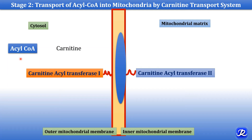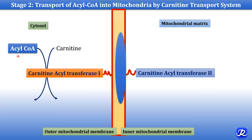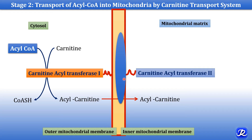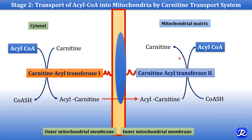The acyl-CoA cannot traverse the inner mitochondrial membrane, so the acyl group is transferred from acyl-CoA to carnitine by carnitine acyl transferase 1, located on the outer mitochondrial membrane. Carnitine is synthesized in the liver and kidney from lysine and methionine. When the acyl group is transferred, acyl-carnitine is formed and coenzyme A is released. This acyl-carnitine is then transported into the mitochondrial matrix through the translocase.